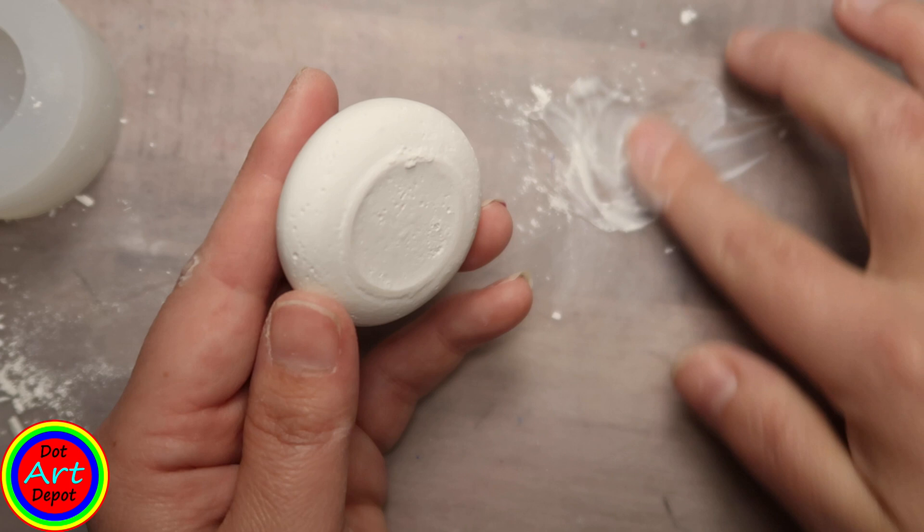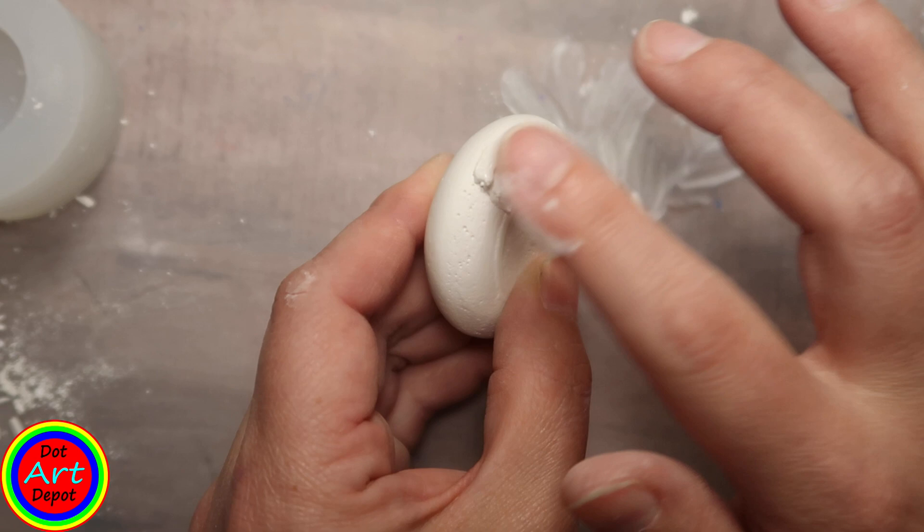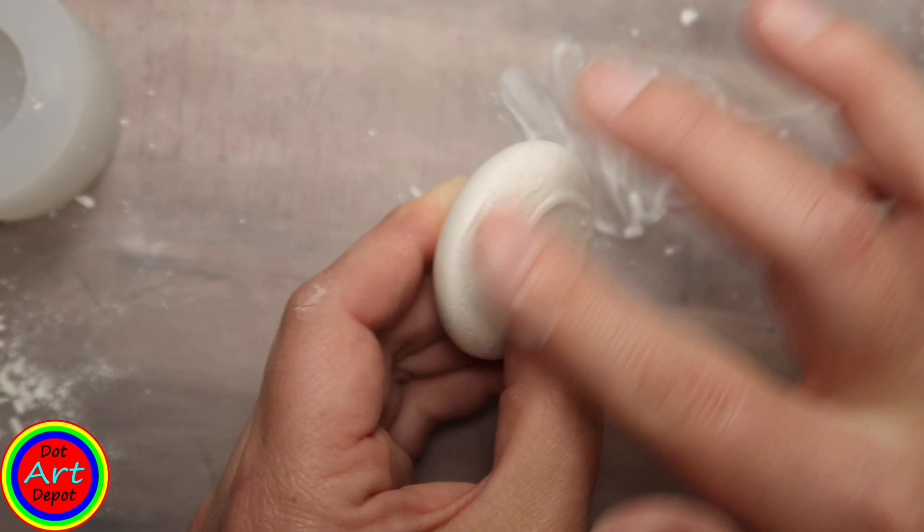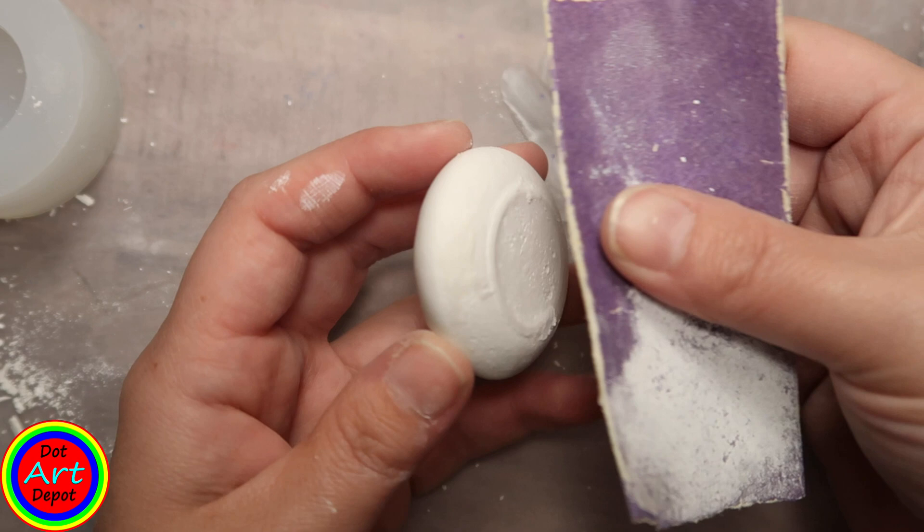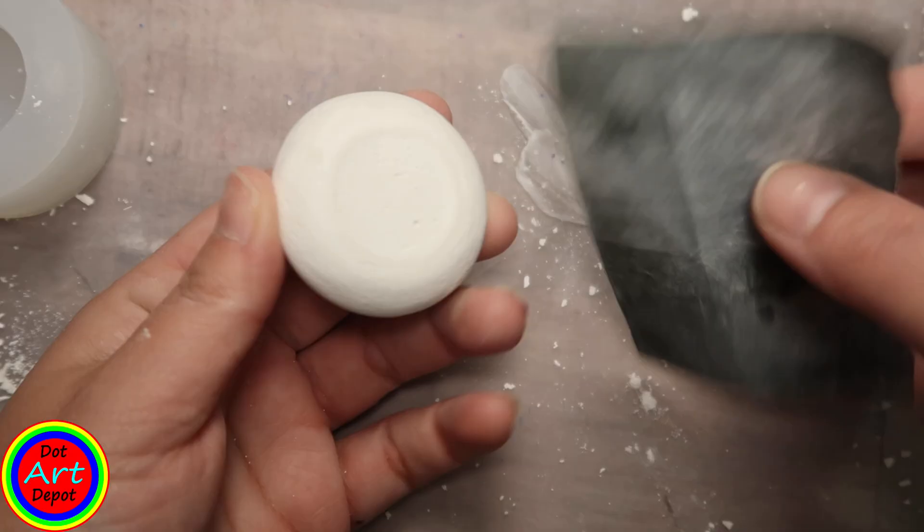Just smooth it on real quick and let that dry. Once it's dry you can go back in and use your sandpaper and smooth it right back out, and you're good to go. It takes stones that you sometimes will think are ruined or no good and turns them into totally workable stones again. I think it's a great little tip.